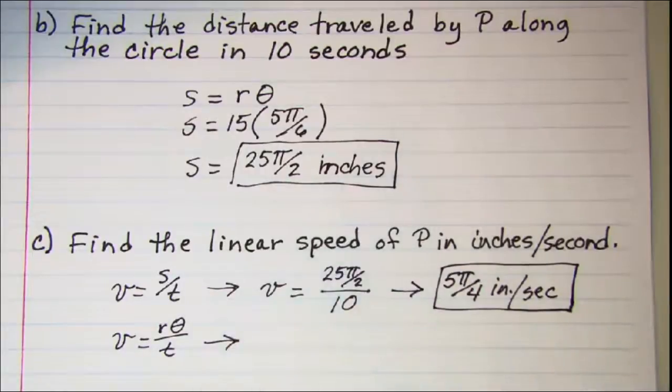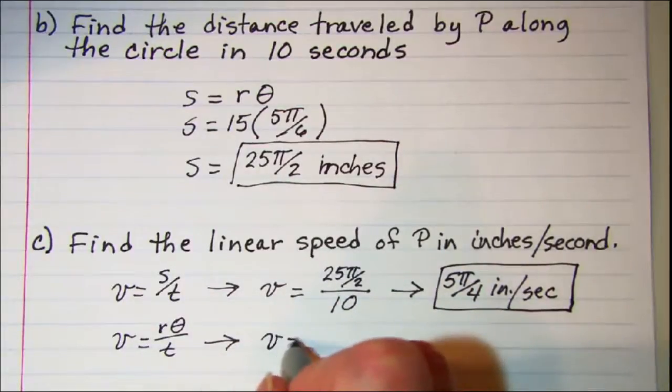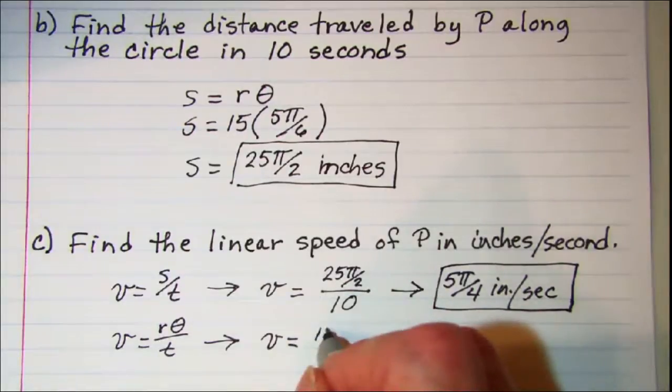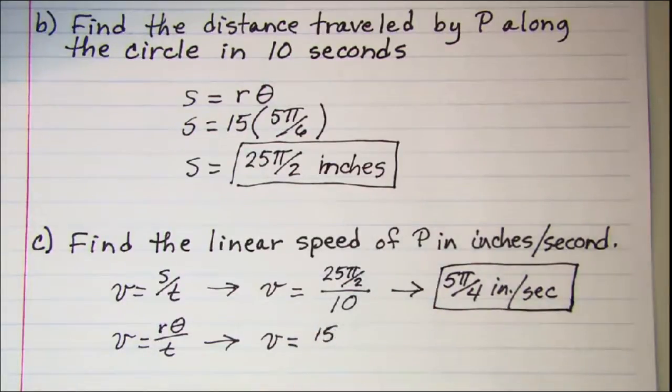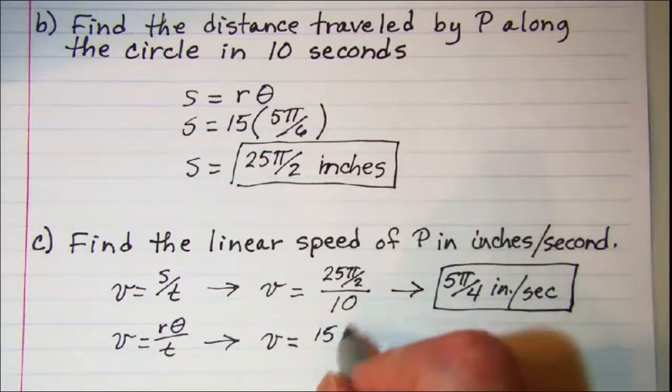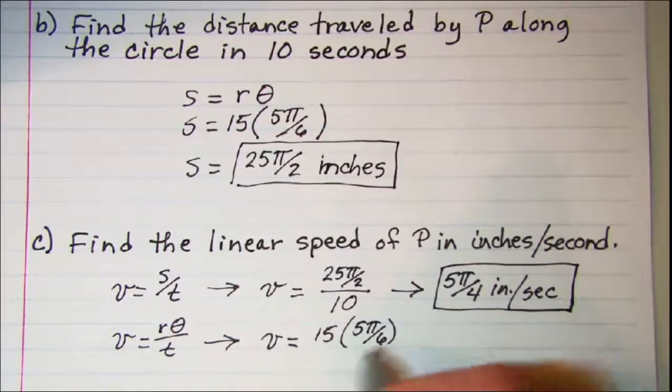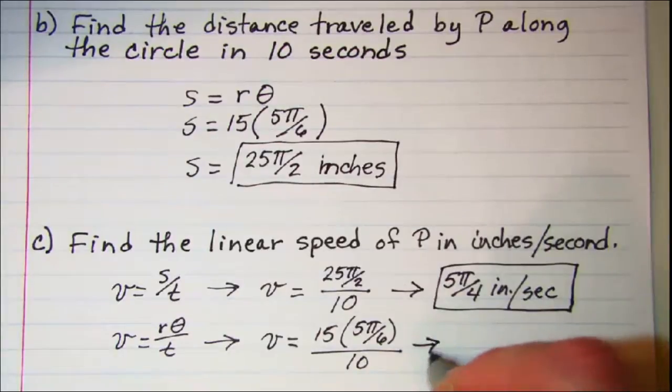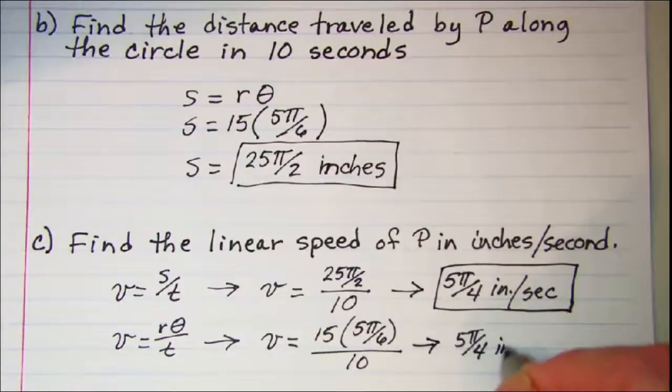So if we use that formula we get v is equal to, remember our radius was 15 inches. And our θ was 5π over 6. And our time is 10 so this also gives me 5π over 4 inches per second.